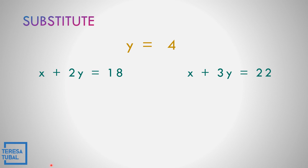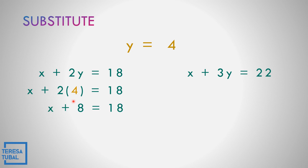Let us substitute the value for y, which equals 4, into equation 1. Replacing y by 4: x plus 2 times 4 equals 18. Multiplying 2 times 4 gives 8, so x plus 8 equals 18. Combining like terms and changing the sign of positive 8 to negative 8: 18 minus 8, so x equals positive 10.